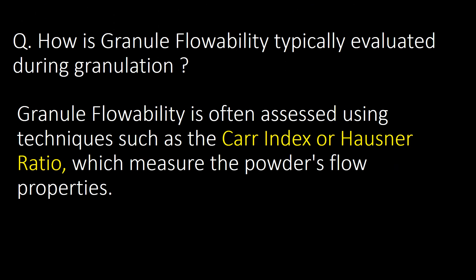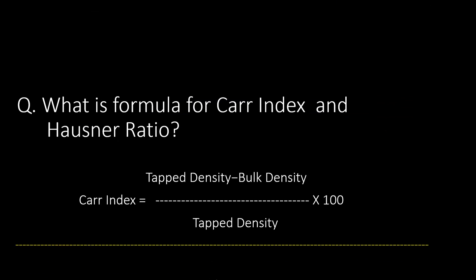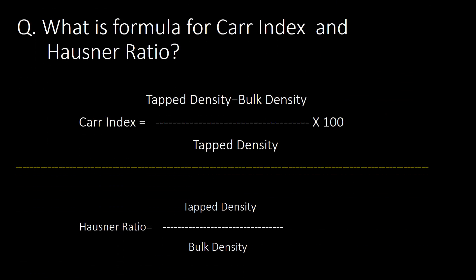How is granule flowability typically evaluated during granulation? Granule flowability is assessed using techniques such as the Carr index or Hausner ratio, which measure powder flow properties. The Carr index = (tap density − bulk density) / tap density × 100, whereas the Hausner ratio = tap density / bulk density.